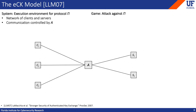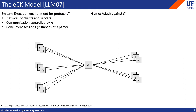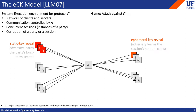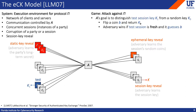We model an active network attacker by having the adversary be responsible for relaying all traffic in the network. It's also responsible for initiating each session — that is, each instance of a party running the protocol, presumably with an instance of some other party. The attacker is empowered to corrupt a session by revealing its ephemeral key, which consists of the random coins consumed by that session, for example to generate the party's key share. It can also corrupt a party by revealing that party's static key, the long-term secret used across multiple sessions. So in our case, a client's static key would be its password.